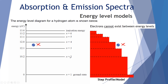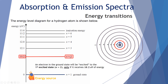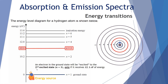An electron in the ground state can be excited to the first excited state, n equals 2, only if it receives exactly 10.2 electron volts of energy. The energy source could be heat energy, thermal energy, or electrical energy such as passing a current. Likewise, it can be excited to the second excited state, n equals 3, only if it receives exactly 12.1 electron volts. On the right, you can see the electron moving from the ground state to n equals 3.